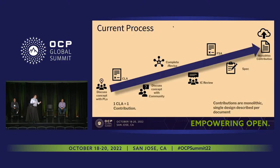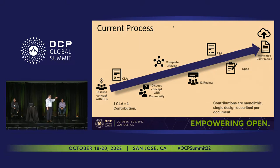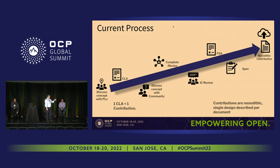A more detailed look at this — this is our current process where a single contribution is done underneath a single CLA. We have the stuff we mentioned earlier where you're discussing the concept with the community, there's revision, feedback, then IC review and approval. At this point, a final spec agreement is signed that puts the cherry on top of the contribution. It is version-specific, so it limits what is being contributed and defines it very specifically, and then of course we have our contribution.